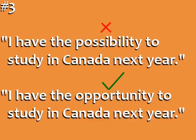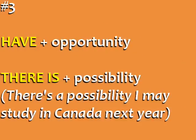Error number three: With the word 'have,' we use 'opportunity,' not 'possibility.' The word 'possibility' is more used with 'there is.' For example: 'There's a possibility I may study in Canada next year.'